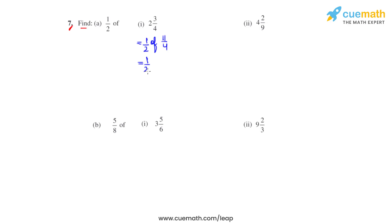So we replace 'of' with a multiplication sign and write it as 1/2 times 11/4, and that will be 11/8. If we divide 11 by 8, we get the quotient as 1 and the remainder as 3. So the mixed fraction for this will be 1 3/8.